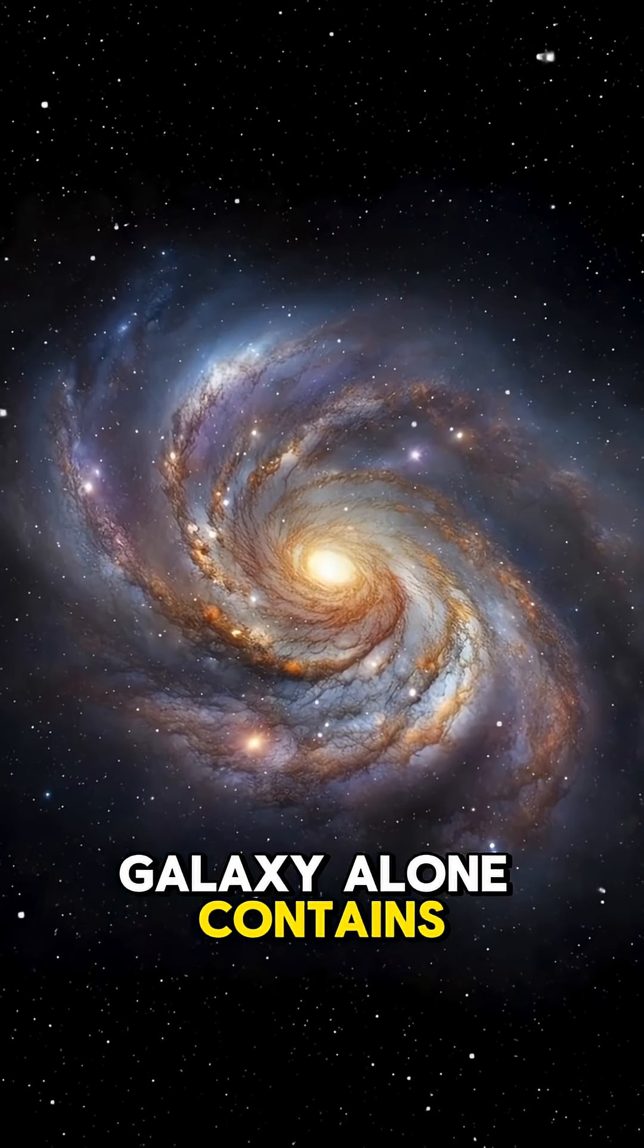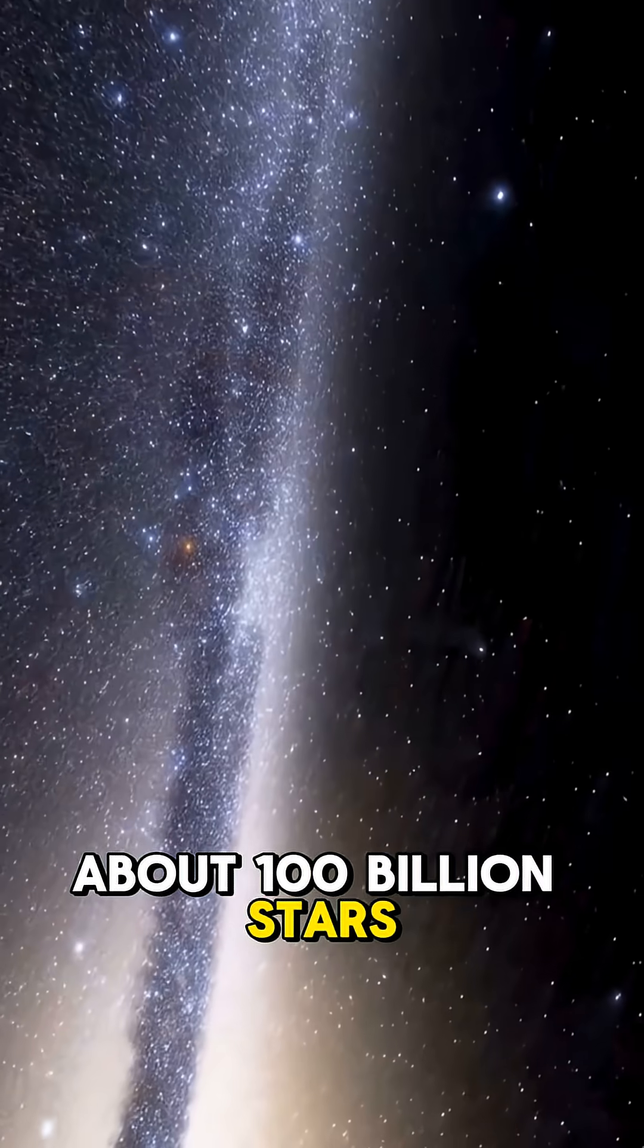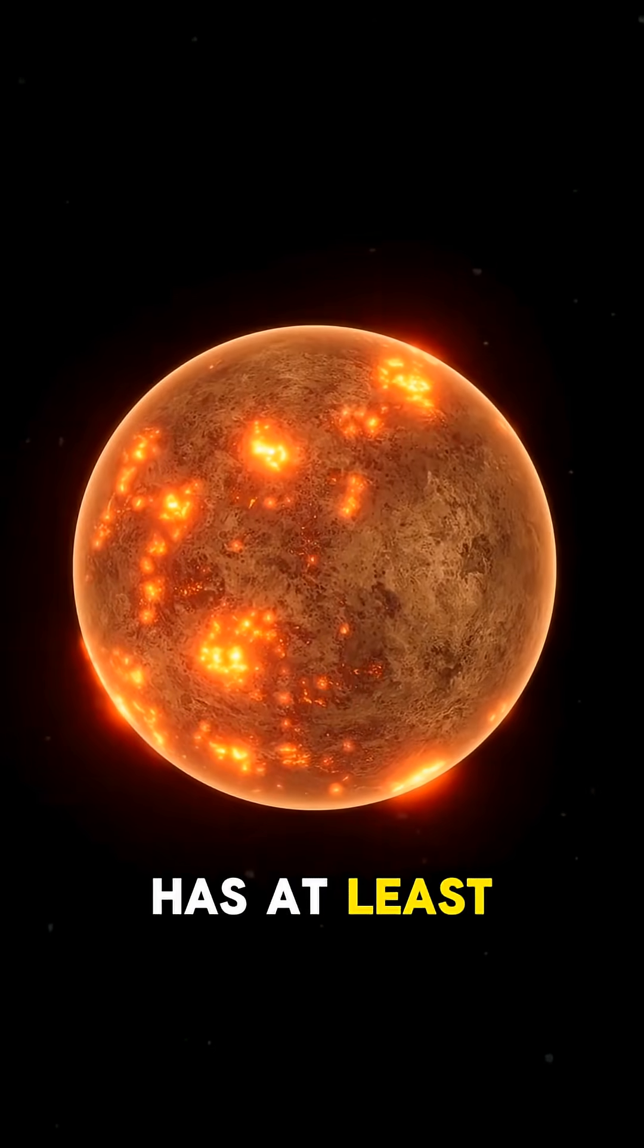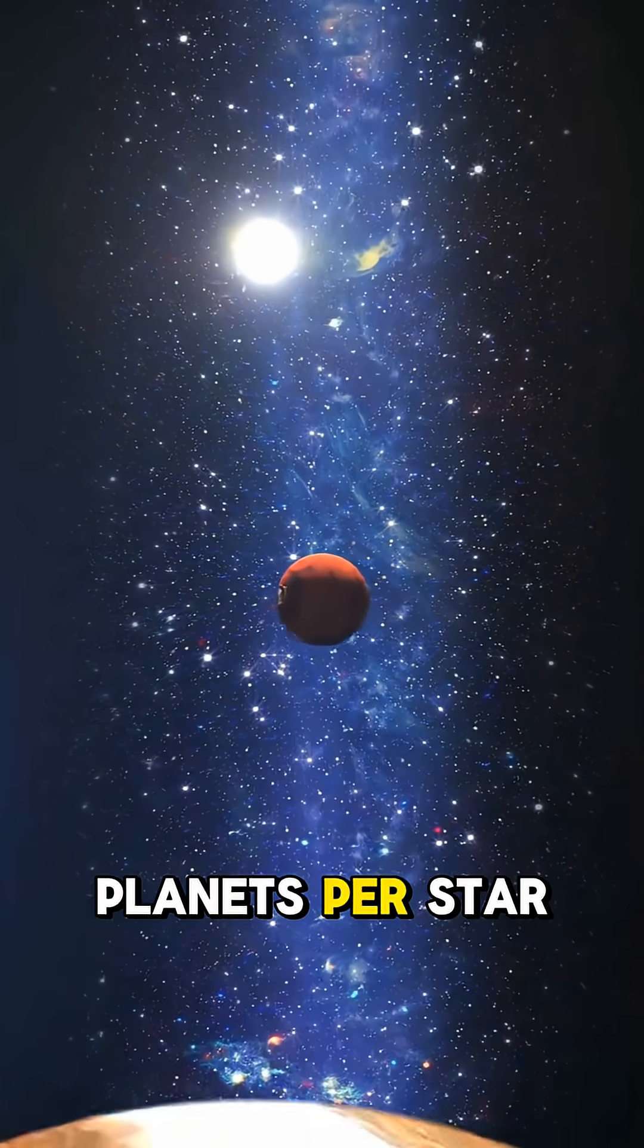Our Milky Way galaxy alone contains about 100 billion stars. And based on what astronomers have observed, almost every star has at least one planet, but on average, there are two planets per star.